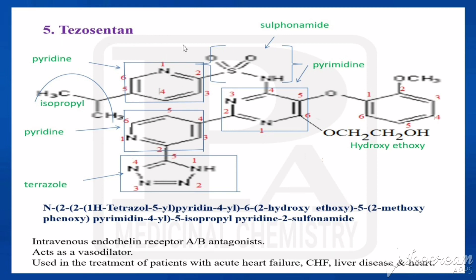The next drug is Tezosentan. The parent nucleus is pyridine with a sulfonamide — pyridine-2-sulfonamide. In the 5th position of pyridine there is an isopropyl group. The nitrogen of the sulfonamide is connected with pyrimidine, and the 2nd position of pyrimidine is connected with a pyridine, whose 2nd position is connected with a tetrazole (pterazole — an azole with 4 nitrogens). The 6th position is connected with hydroxyethoxy, and the 5th position has 2-methoxyphenoxy.